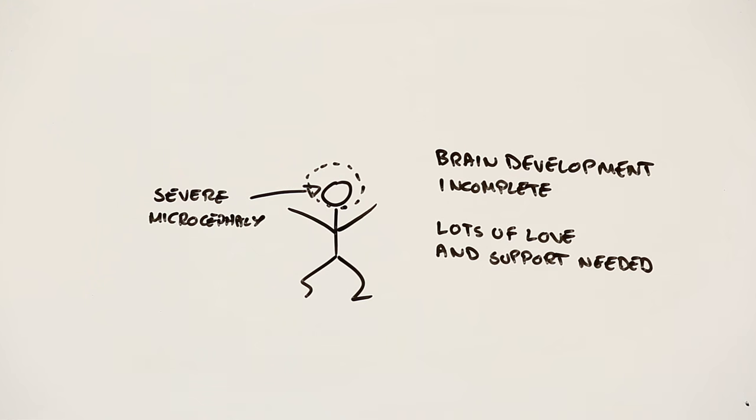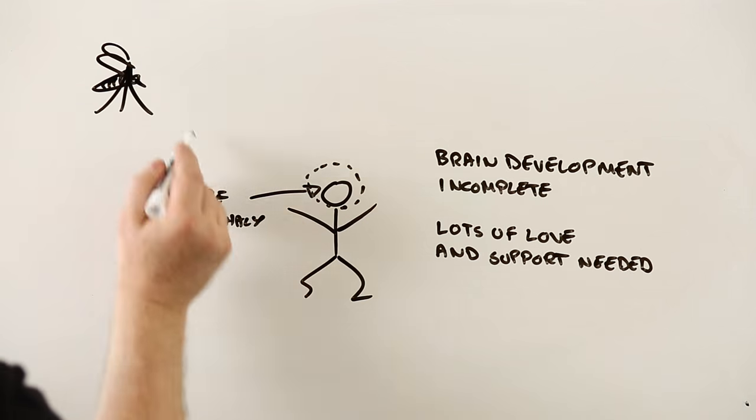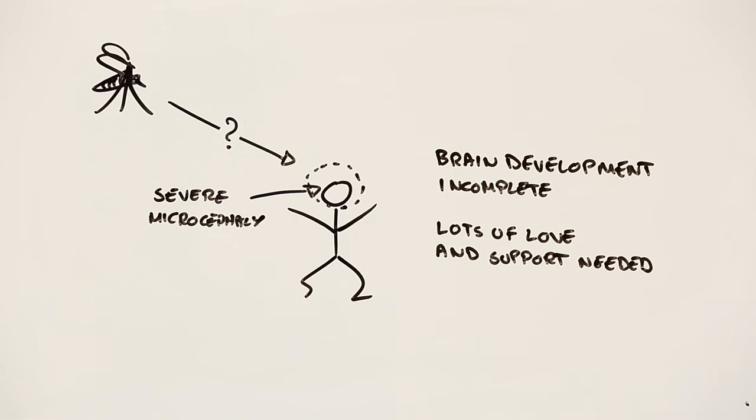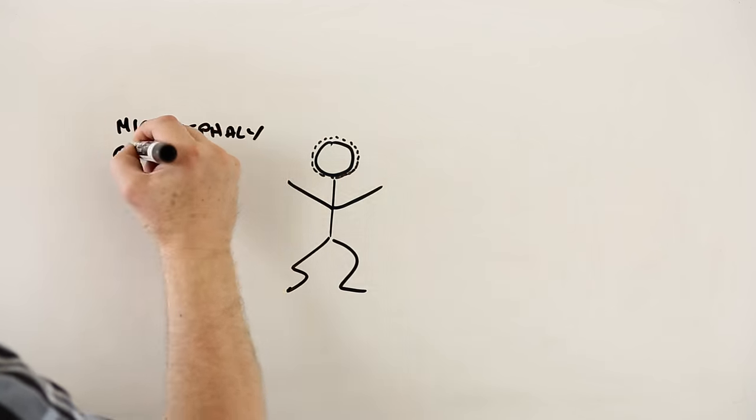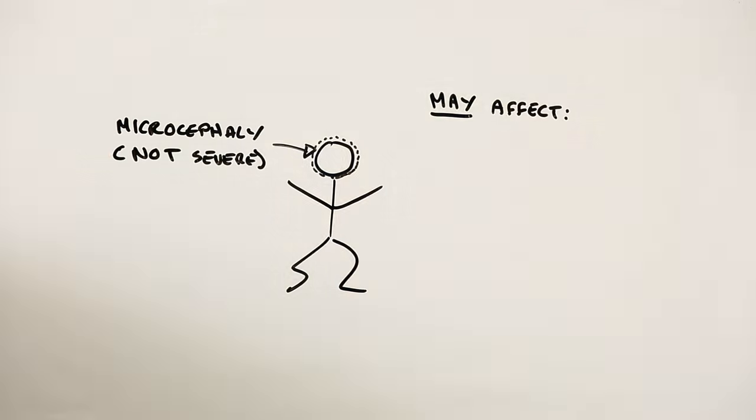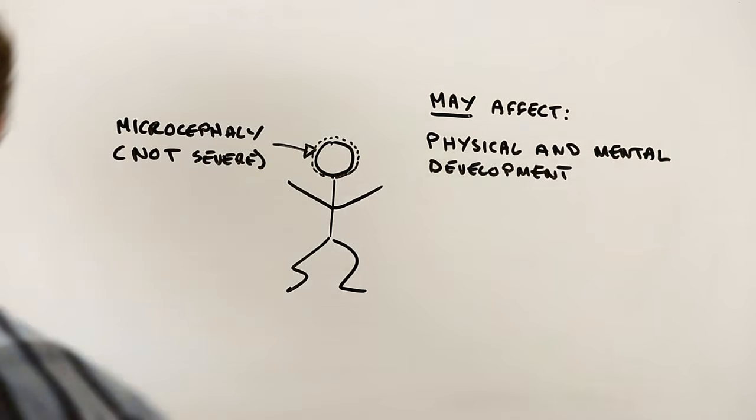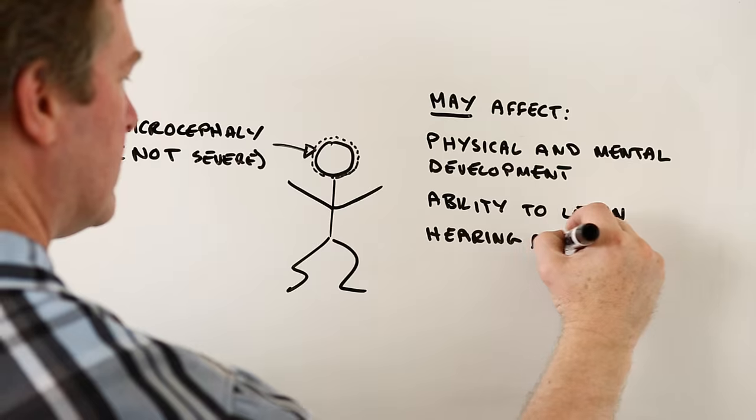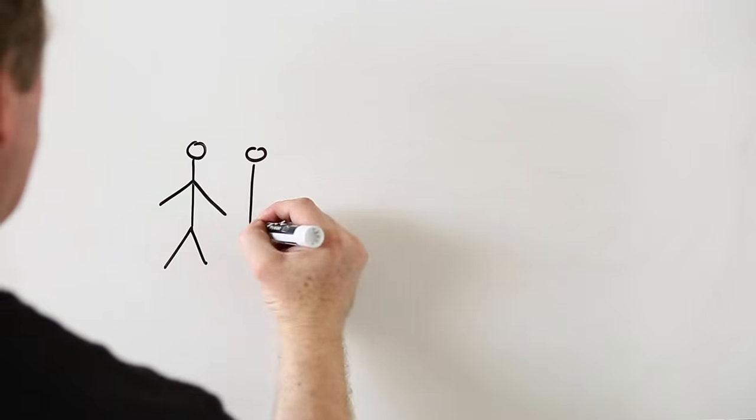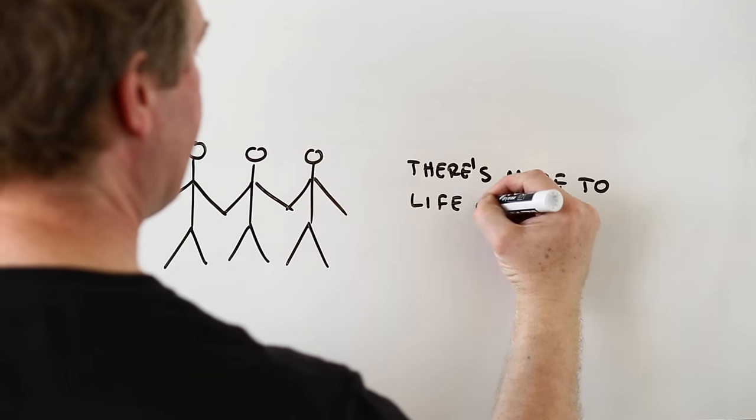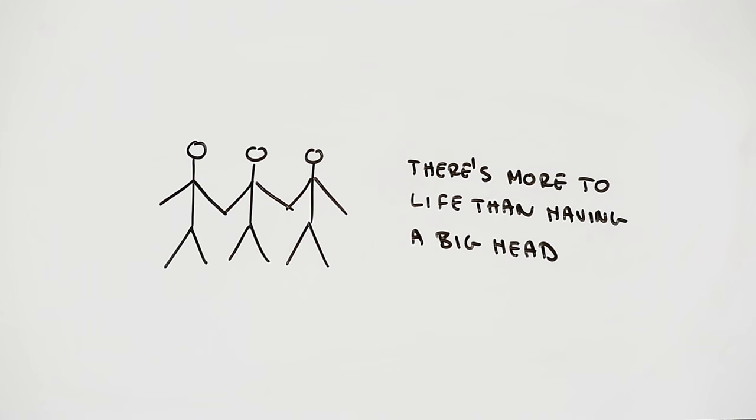At the moment though, we don't know how likely this extreme form of the condition is if you're exposed to Zika while pregnant. Less severe cases of microcephaly can lead to effects such as delays in physical and mental development, learning disabilities, seizures, and hearing and vision problems. These can sound scary, and they can be challenging to live with, but the good news is that people with them can and do live full and active lives.